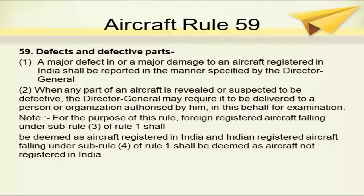Aircraft Rule 59 covers defects and defective parts. A major defect in or major damage to an aircraft registered in India shall be reported in the manner specified by the Director General. When any part of an aircraft is revealed or suspected to be defective, the DG may require it to be delivered to a person or organization authorized by him for examination.